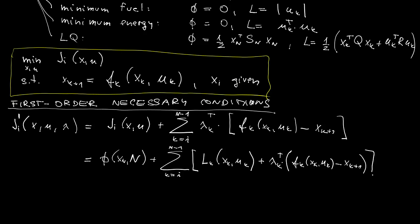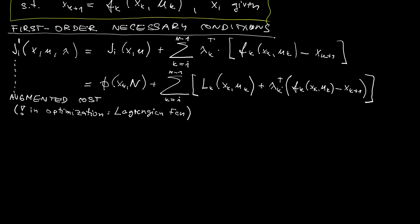Now, a word on terminology. Indeed, we will call this augmented cost function, even though you may recall from our introduction to optimization that this should perhaps be called Lagrangian function. The trouble, however, is that in controls theory and dynamical systems, we use the term Lagrangian for something slightly different. Another convention that we'll make here is that I will relabel lambda k to lambda k plus 1, just for aesthetics reasons.